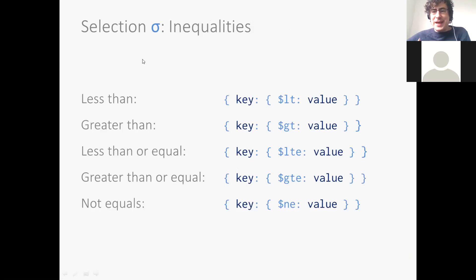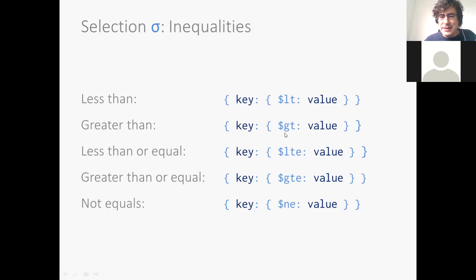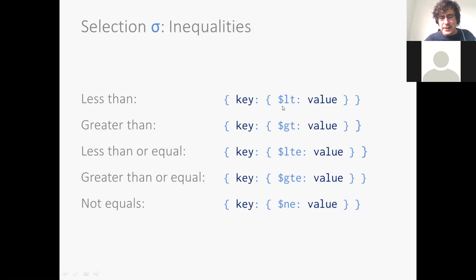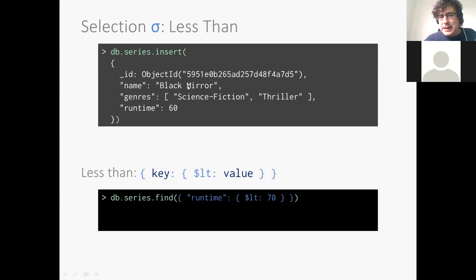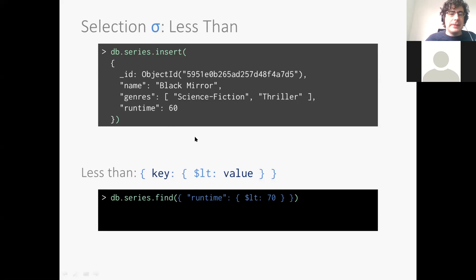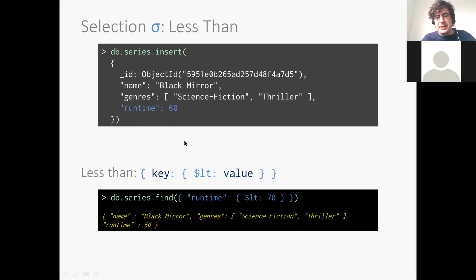Aside from equality, we can also do inequalities: less than, greater than, less than or equal, greater than or equal, not equal — using $lt, $gt, $lte, $gte, $ne in a JSON-style syntax rather than typical symbols. To find all series with runtime less than 70 minutes, for example: 'runtime: {$lt: 70}'. This document matches because 60 is less than 70.